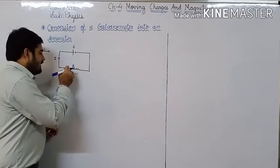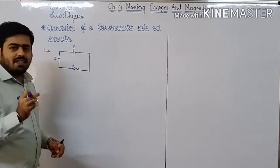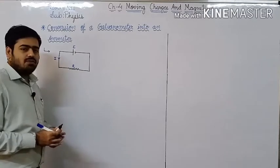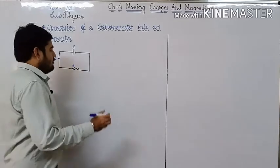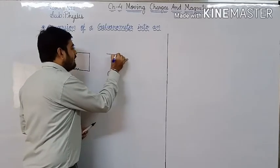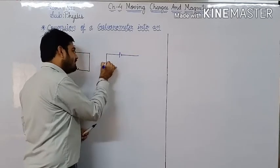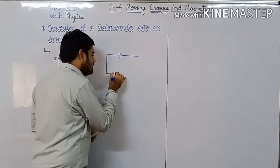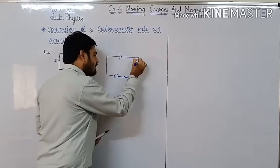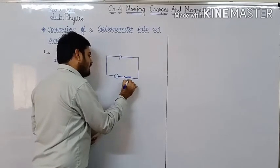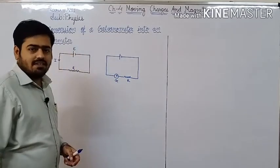When current I is flowing through this resistance R, and if we want to measure this electric current, then we should connect one current meter in this circuit so that we can measure the amount of electric current flowing through this circuit. So if I connect galvanometer to measure this electric current in this circuit, then we should connect galvanometer in series with resistance R.